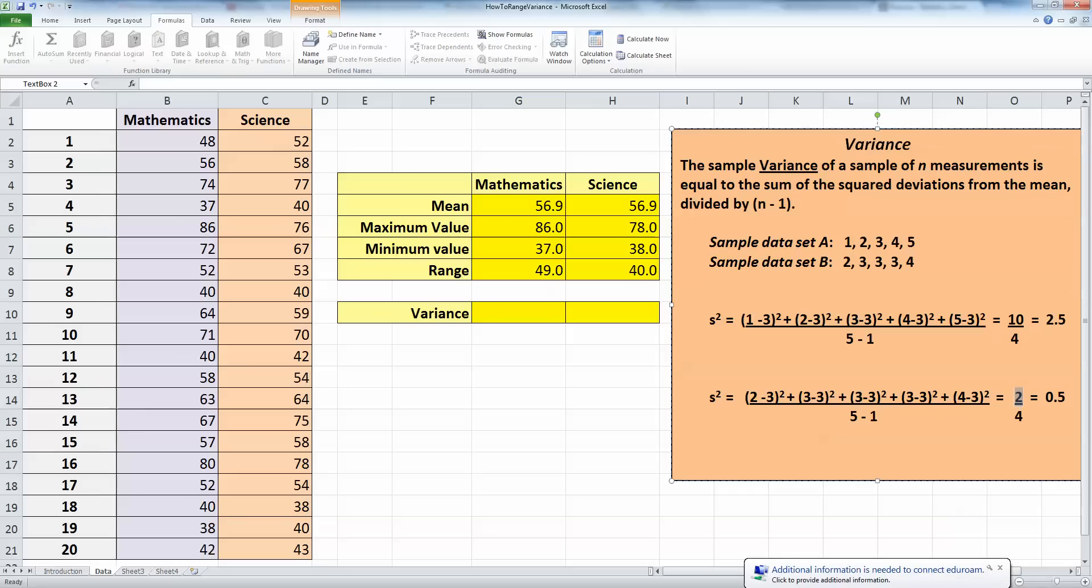And this time, we get a total of 2 for the top line. The bottom line is still the same. n minus 1 is 5 minus 1, which is 4. 2 divided by 4 gives us a value of 0.5.